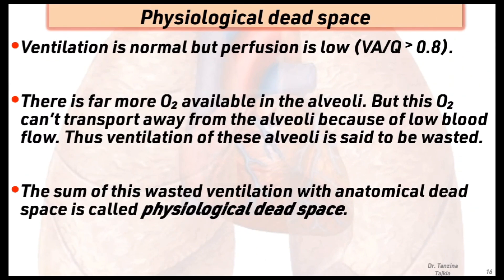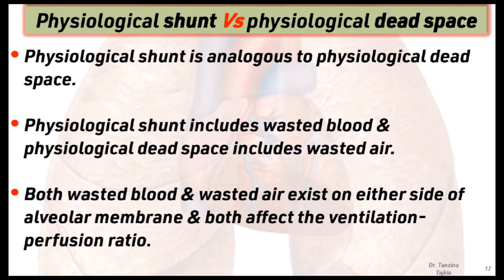In physiological dead space, ventilation is normal but perfusion is low. There is far more oxygen available in the alveoli, but this oxygen cannot be transported away because of low blood flow. Thus ventilation of these alveoli is said to be wasted. The sum of this wasted ventilation with anatomical dead space is called physiological dead space. Physiological shunt is analogous to physiological dead space — shunt includes wasted blood and dead space includes wasted air — and both affect the ventilation-perfusion ratio.